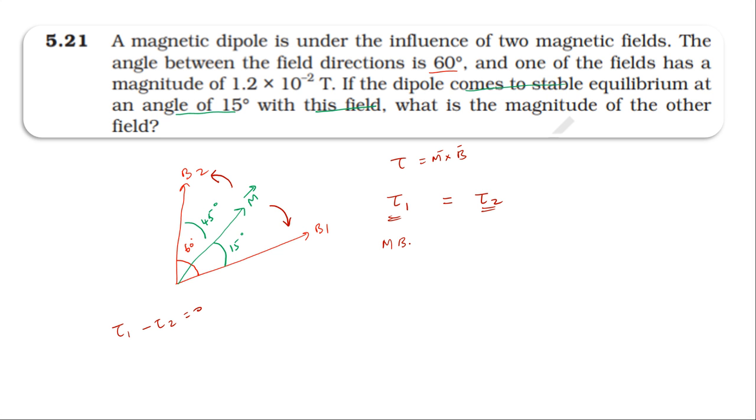So m into B₁ into sin 15 degrees equals m into B₂ into sin 45 degrees. The second field makes a 45 degree angle. The m cancels out.